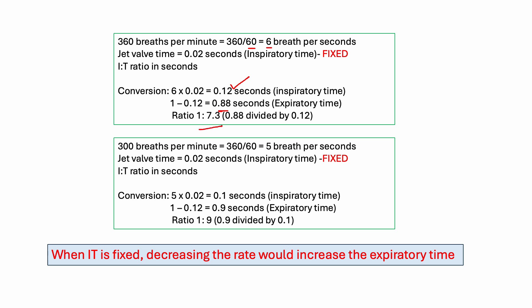The same calculation applies when the rate is changed to 300. The concept and the calculation remain the same, and the I:E ratio of course increases because the rate is decreased.